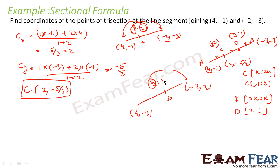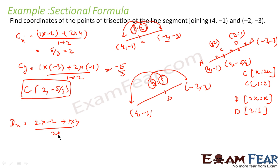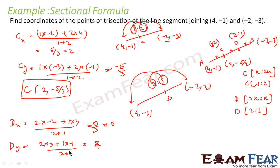For D, we multiply 2 with this point and 1 with the other. So D's x-coordinate: 2 into (-2) plus 1 into 4, divided by 2 plus 1. This gives (-4 + 4) / 3, that is 0/3, which equals 0. Similarly, D's y-coordinate: 2 into (-3) plus 1 into (-1), divided by 2 + 1. That is (-6 - 1) / 3, which is -7/3.